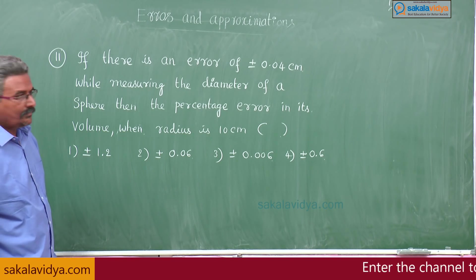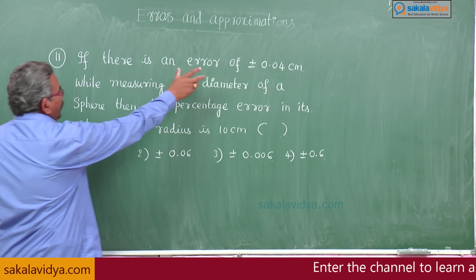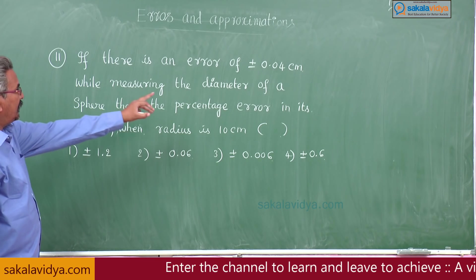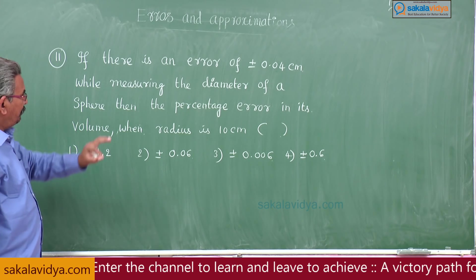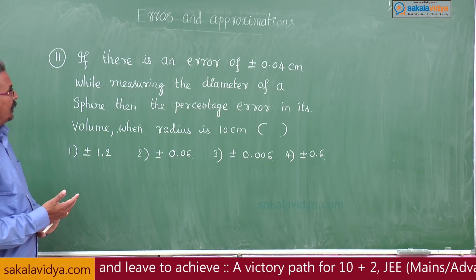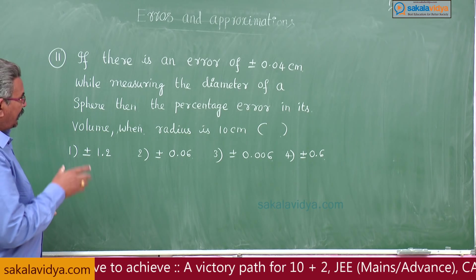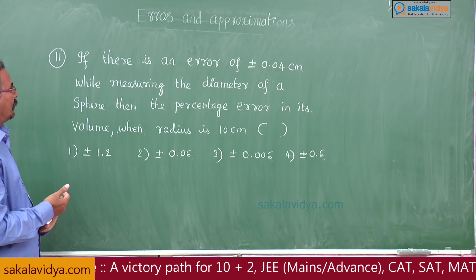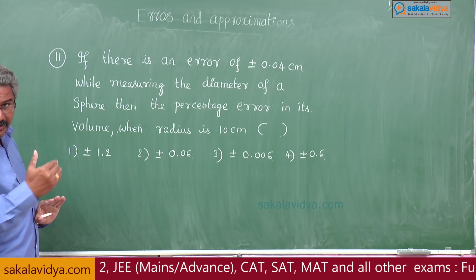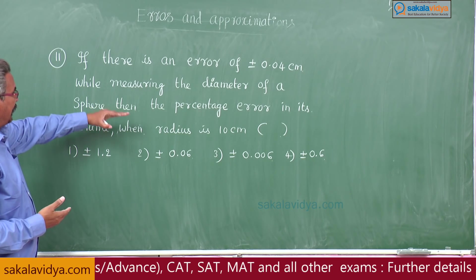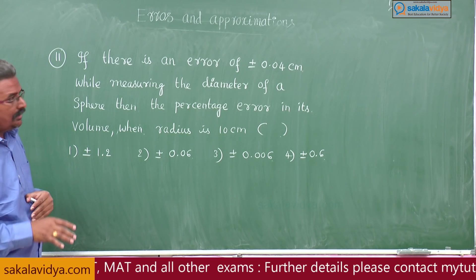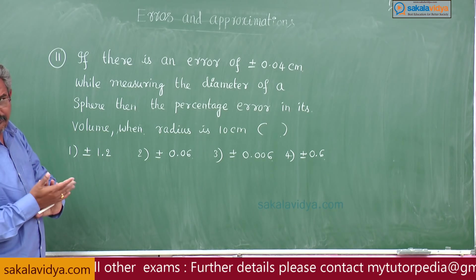11th problem: if there is an error of plus or minus 0.04 centimeters while measuring the diameter of a sphere, then percentage error in its volume when radius is 10 centimeters. So that means actually radius is 10 centimeters is given, here we have to change the error in radius also. Error in radius means plus or minus 0.04 by 2, that is plus or minus 0.02.